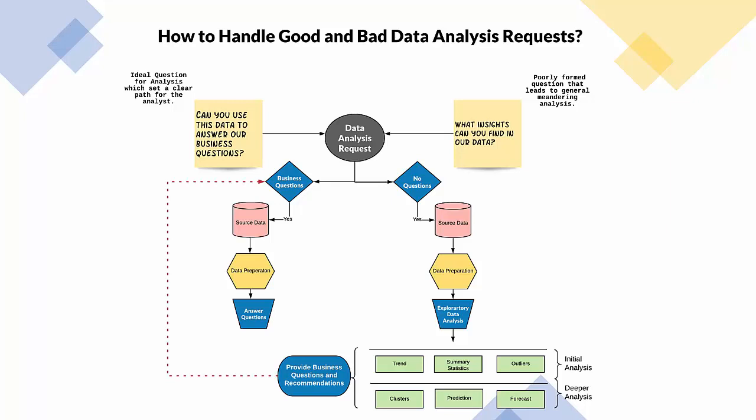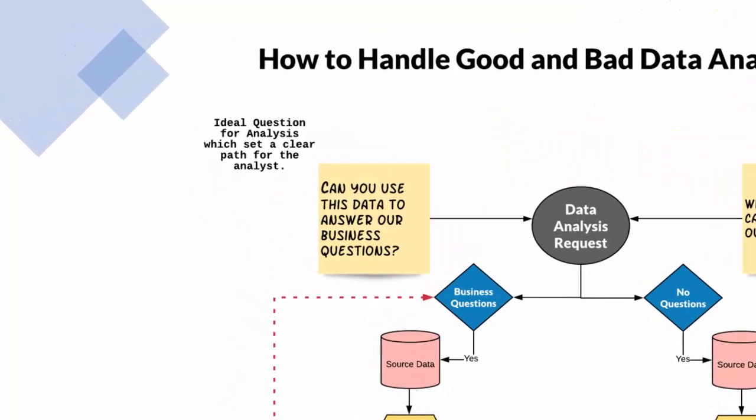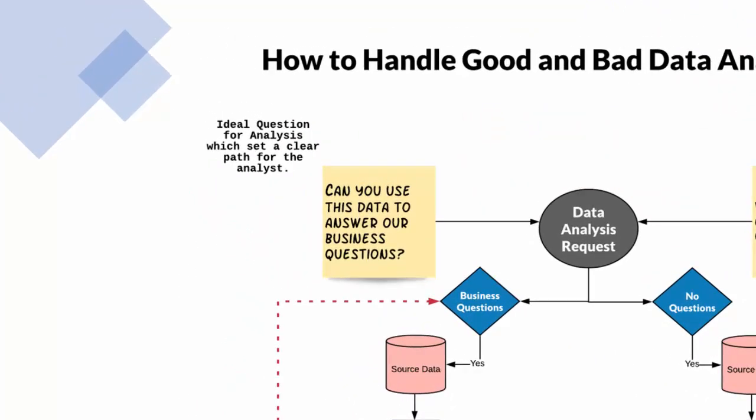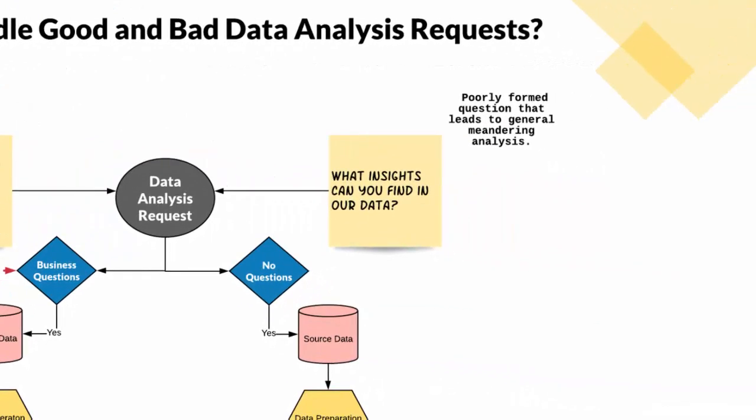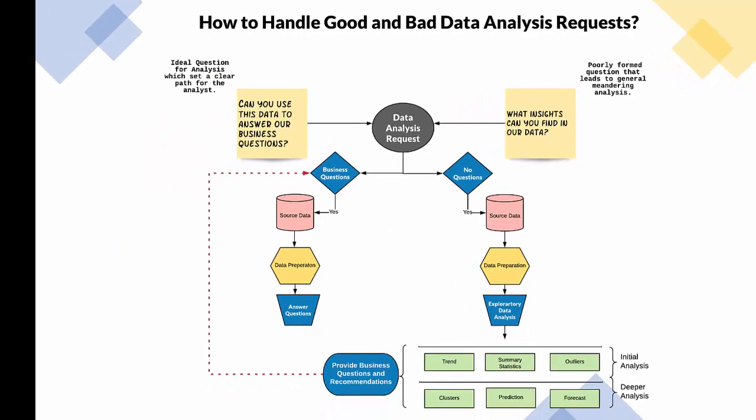An ideal question is going to give you a clear path to analysis. This will be business questions that you're going to answer through the data. A poor question is going to be a very general question asking you to analyze data with no direction. So let's take a look at this flowchart and see how we would handle each one of those questions.